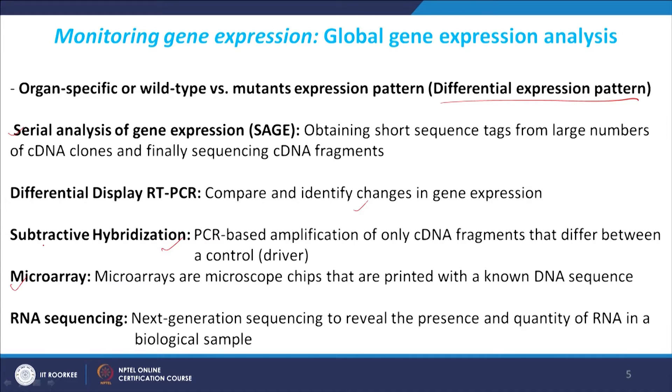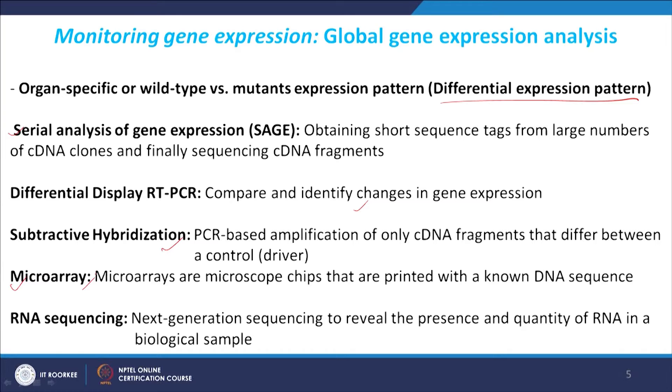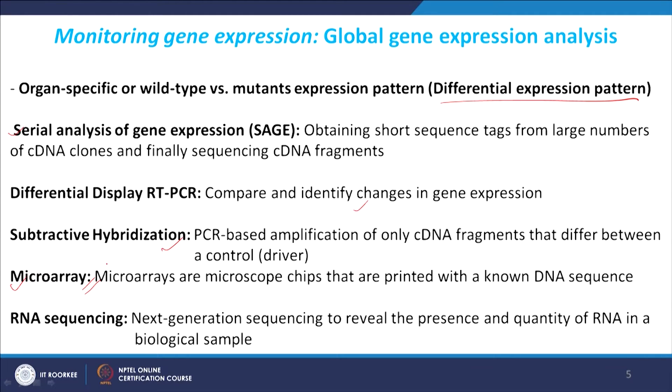The technique most widely used in genomics-based differential expression pattern analysis was microarray. Microarray was the technique where small single-stranded oligos were spotted on a chip, and then total RNA was isolated from a particular condition to identify differential expression. We will see microarray in great detail, as this is one of the most used technologies in plant developmental biology. More recently, next generation sequencing has changed the entire scenario — now we are doing a lot of RNA sequencing, which has many benefits over microarray.